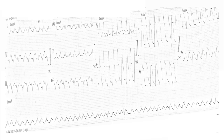Grossly looking at this ECG, we can see that this patient is definitely tachycardic — it is a pretty fast rhythm. Since it's a very fast rhythm, it's hard to identify P waves, although you should try to look for them. For a convincing P wave, we need a good quality ECG with appropriate scales.